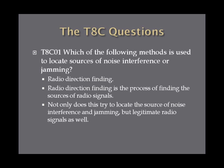Which of the following methods is used to locate sources of noise interference or jamming? This is called radio direction finding, and radio direction finding is the process of finding the sources of radio signals — basically, what direction are they coming from. You triangulate that and you're good to go. Not only does radio direction finding locate sources of noise interference and jamming, but you can use it for legitimate radio signals as well, like transmitter hunting and a couple other activities.